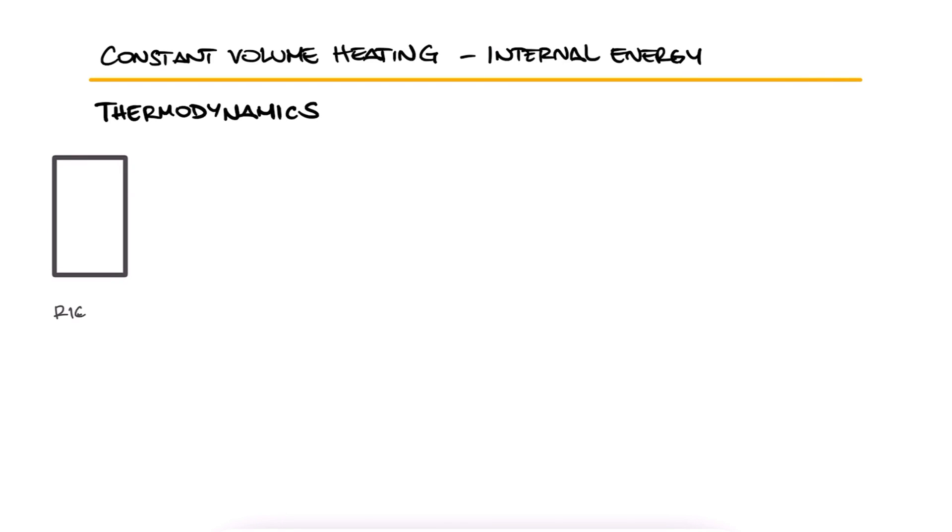A closed and rigid tank has a volume of 0.4 cubic meters and contains water at 0.75 bar with a quality of 80.3363%. If the pressure goes up to 2 bar when heat is added, what is the initial temperature, what is the final temperature, and how much heat was added during this process?